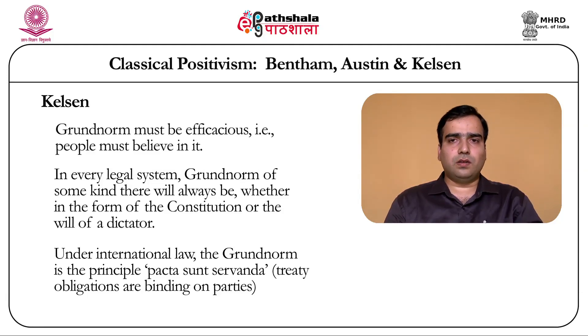The Grundnorm is the ultimate norm — it has no other norm to back its validity. However, all other norms have another norm to validate and make them effective. The Grundnorm in Kelsen's legal sense has inherent validity without any backing from any other norm. Taking the example of a pyramid: the Grundnorm will be at the topmost point or the tip of the pyramid, whereas all other norms will be below it, receiving their authority from another norm, and the ultimate authority can be traced back to the Grundnorm at the top.